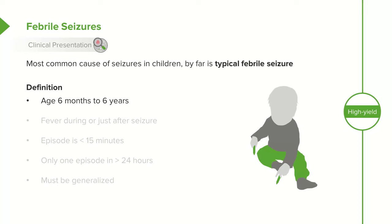By definition, a febrile seizure must occur between age 6 months and 6 years. The child must have a fever either during or just after the seizure. Remember, it's not the temperature causing the seizure — it's actually the inflammatory cytokines such as interleukin-1 causing the seizure in the brain. The fever may be slightly delayed after the seizure, and in fact it commonly is, so they just have to have a fever around that time.